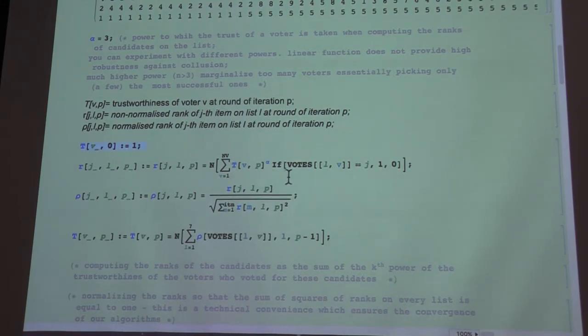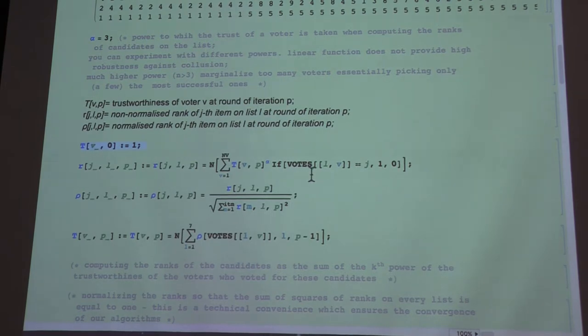and the ranks of all these candidates will be totaled and you get the trustworthiness of the voter. Now notice that we did not here define the ranks just as sum of trustworthiness of the voters who voted for that item, but we take it to power alpha. Why do we do that? Well, this is kind of design parameter.